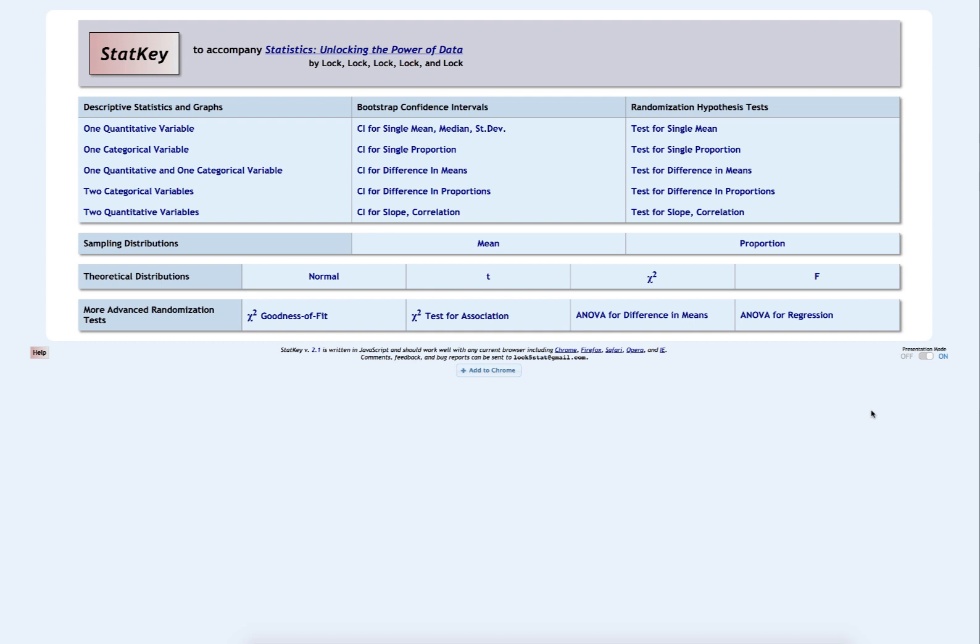I'm going to find the Z score that separates the top 30% of the Z distribution from the bottom 70%. In StatKey, I'm going to construct a normal distribution.